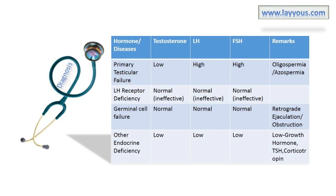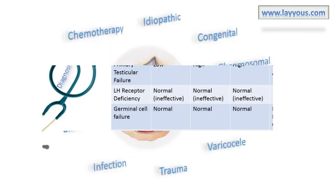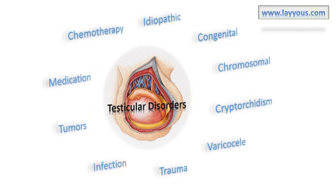In LH receptor deficiency, though hormonal levels are normal, they are ineffective. If all of these hormones are low, it might be associated with other hormonal deficiencies such as low growth hormone, low corticotrophin, or low TSH. Depending on these levels, the treating physician might determine the cause. Testicular disorders — these causes can be discussed with the following points.